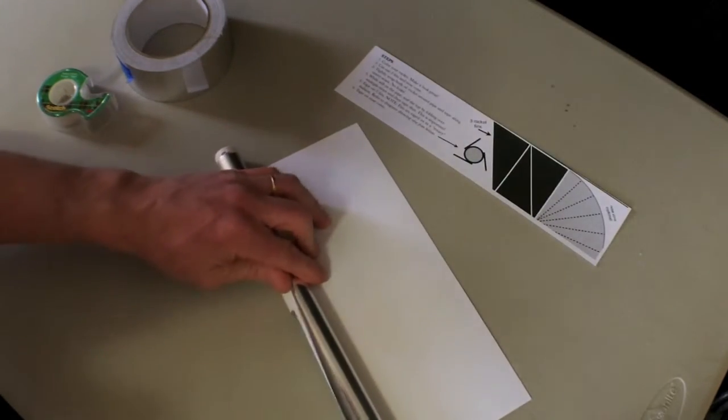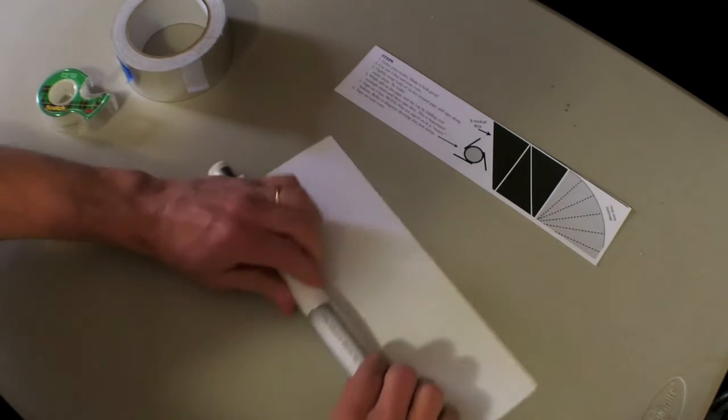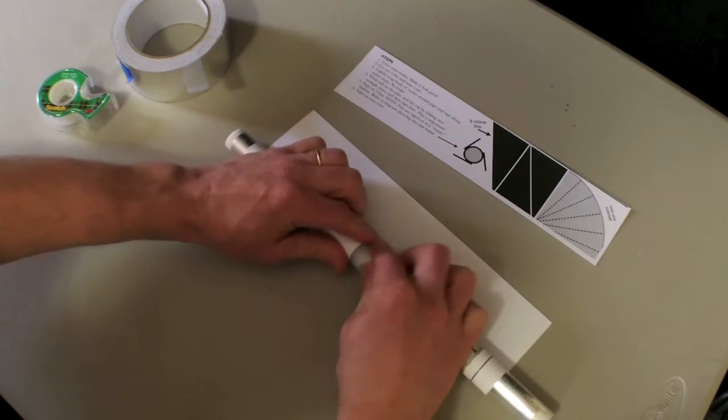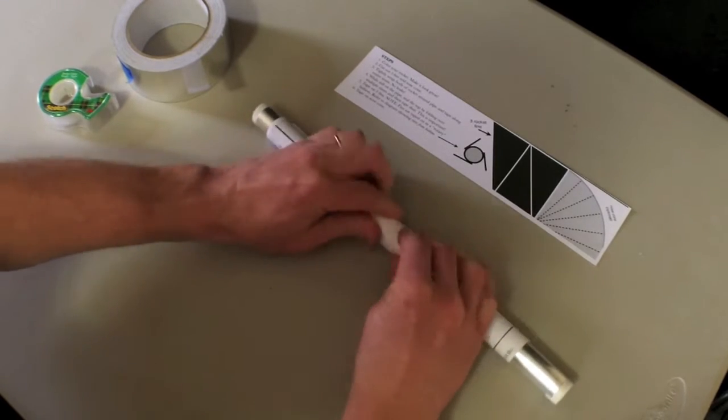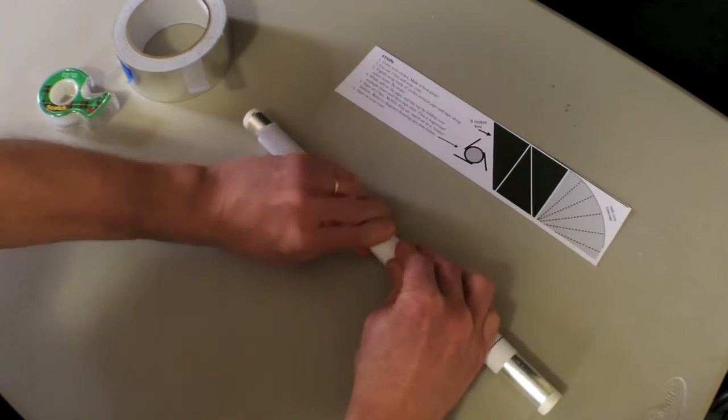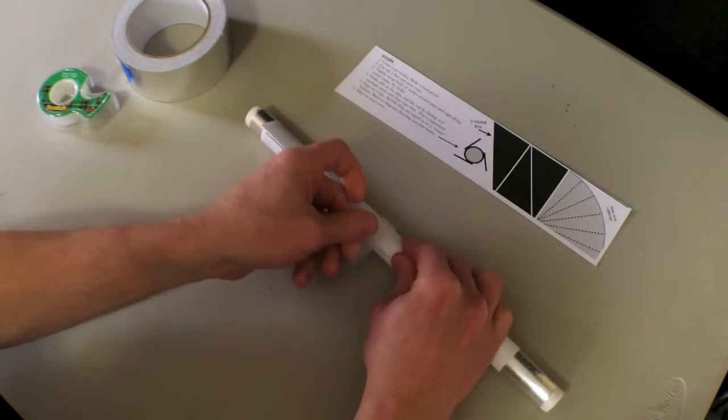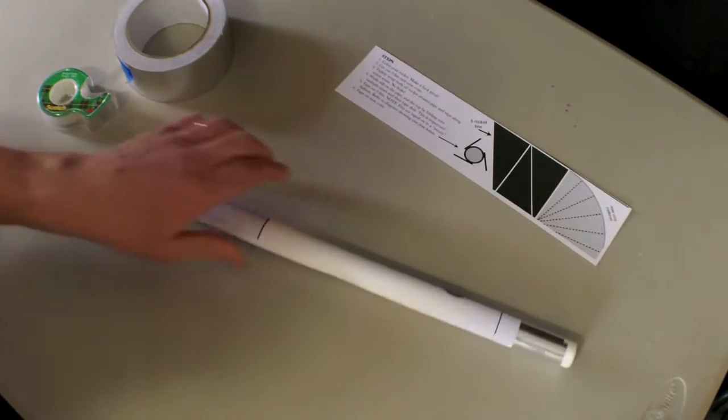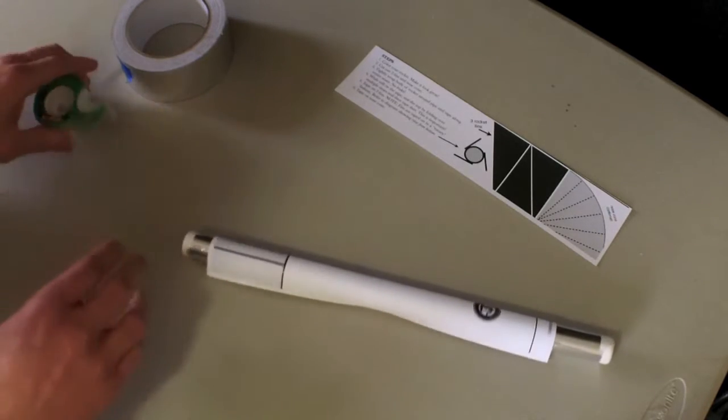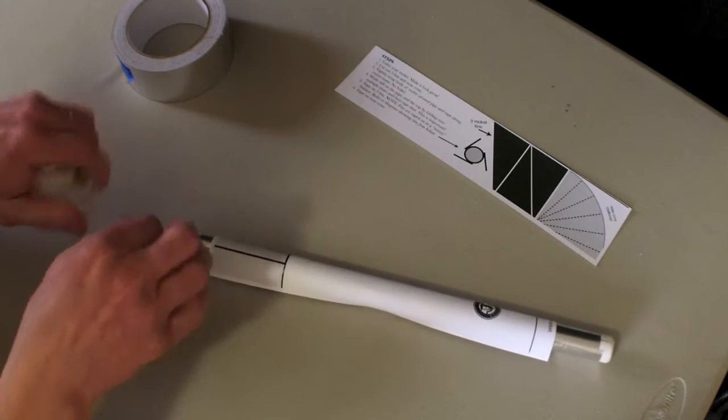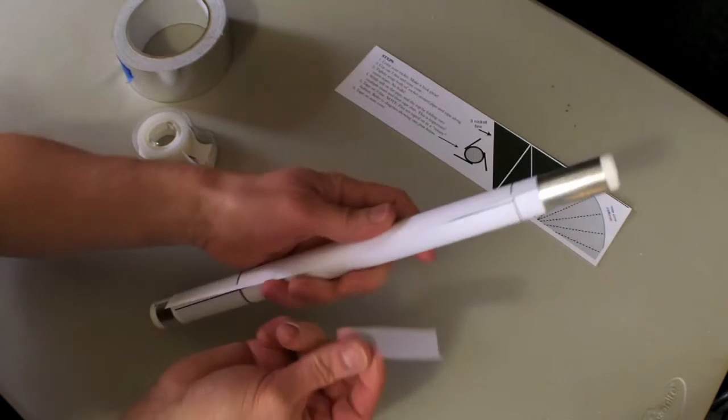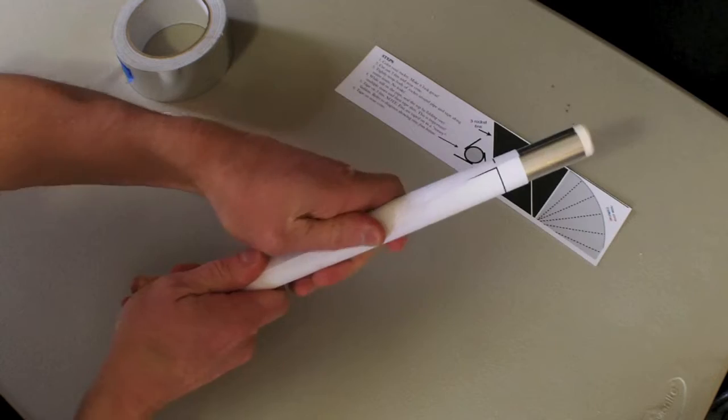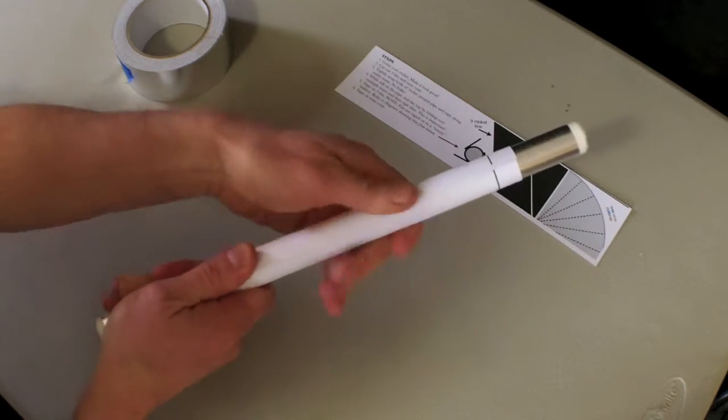So I'm going to roll this tightly around here. Have my piece of tape ready. So that is the first step. And now I recommend having a bunch of short pieces of tape around, especially if you're doing this with kids, and completing the whole seam, taping up this whole seam right here.